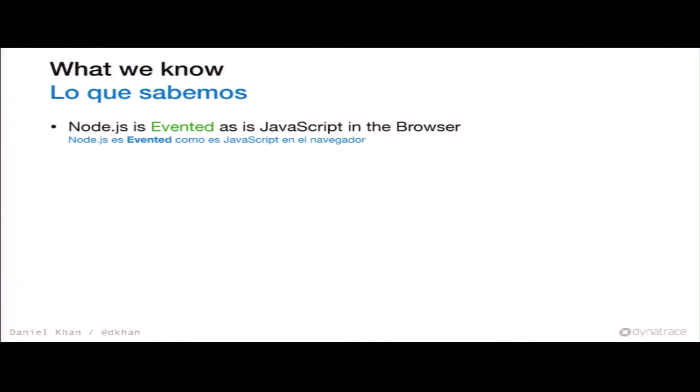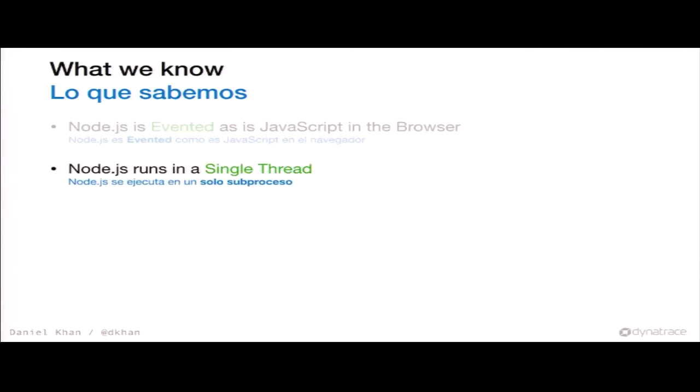What do we know about Node.js and the event loop? We know that Node.js is evented — like everything that is JavaScript. When you're in the browser, you click a button and have some onclick event; that's basically the same mechanism as in Node.js, because there's an event handler registered and an event loop that executes the callback when the event occurs. Node.js runs in a single thread — that's well-known.